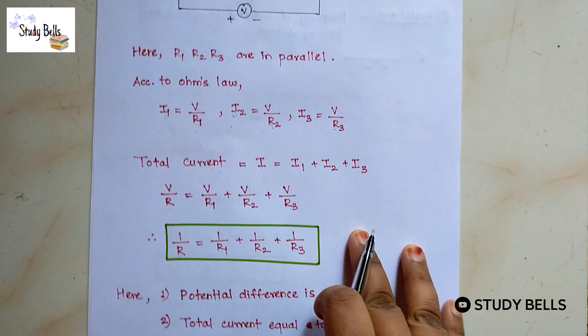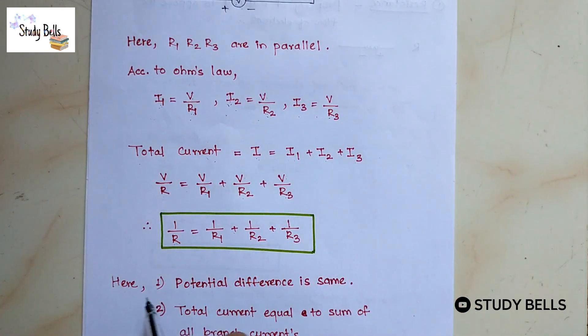So what are the characteristics for parallel circuit? Potential difference is same and total current equal to the sum of all branch currents.